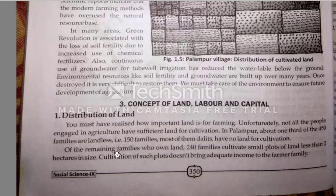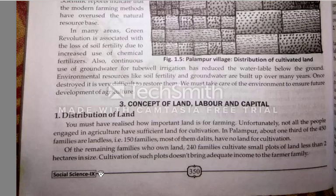Of the remaining families who own land, 240 families cultivated small plots of land less than two hectares in size. Cultivation of such small plots does not bring adequate — that is, sufficient — income to the farmer's family.